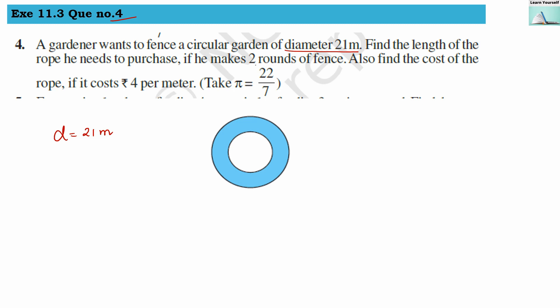Find the length of the rope he needs to purchase if he makes two rounds of fence. Also find the cost of rope if it costs 4 rupees per meter.